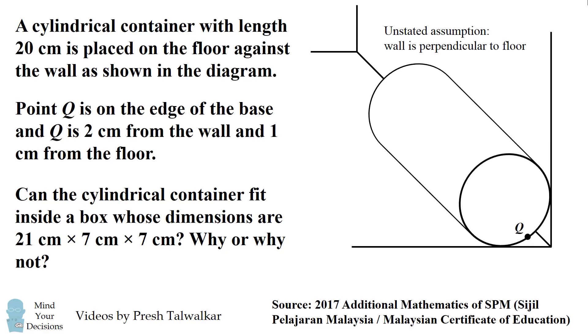Now there's an unstated assumption that the wall is perpendicular to the floor. This is something most of us would assume, but it's not necessarily true. There are walls and floors that are not perpendicular. But go ahead and assume the wall is perpendicular and that this is a perfect right cylinder. Can you figure it out?